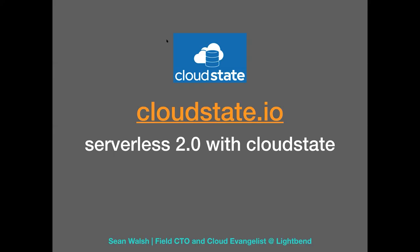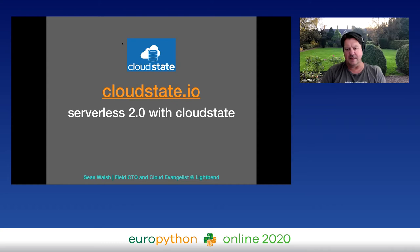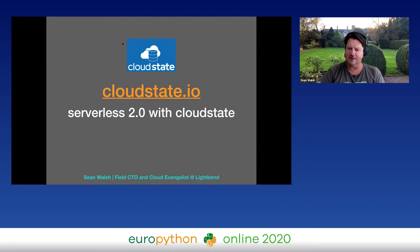This talk is about serverless 2.0 using cloudstate.io and stateful functions with Python. I'd like to talk today about cloudstate.io. It's an open source project around what we like to call serverless 2.0, which is stateful serverless versus the stateless serverless we've been used to with things like Amazon Lambda and function as a service. I'm Sean Walsh, Field CTO and cloud evangelist with Lightbend, who is behind this effort.